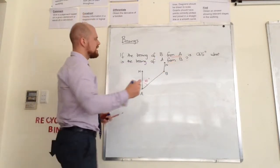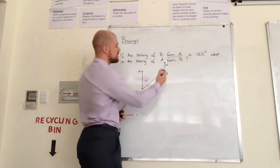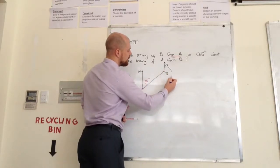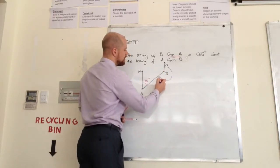So I start at B. Bearings are always measured clockwise, so I start at B and I go clockwise. This is the angle here that I want to know.